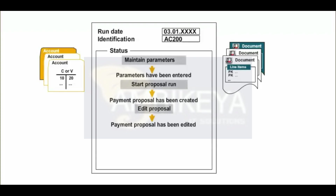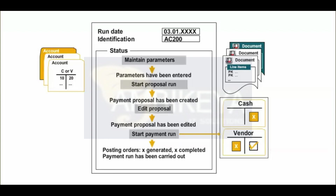Step 4 is the payment run. During the payment run, the system does the following: posts payment documents, clears open items, and prepares data for the printing of payment media.